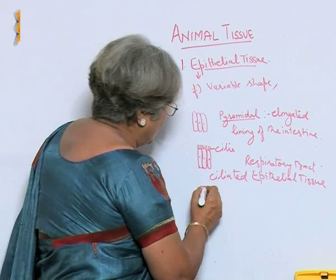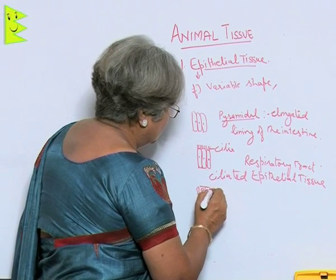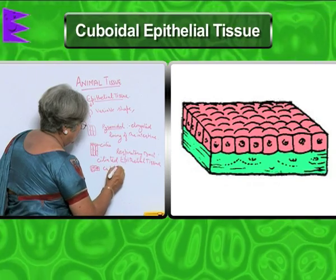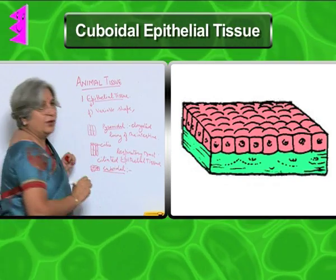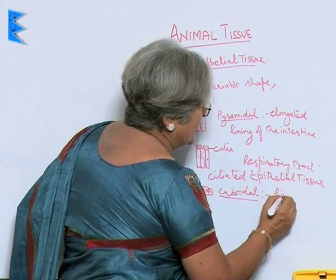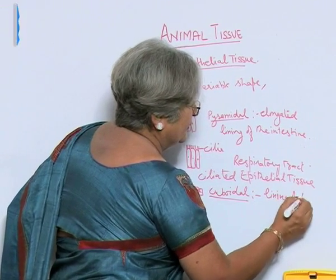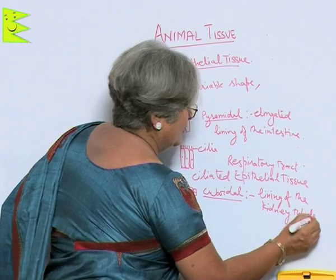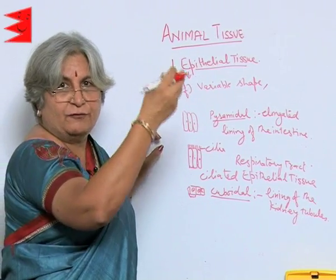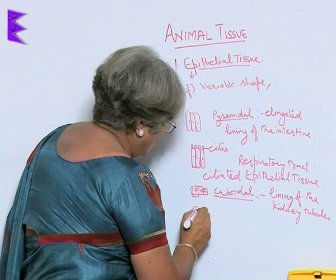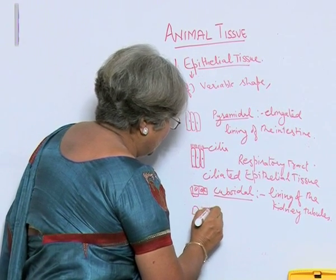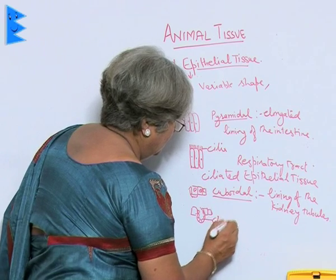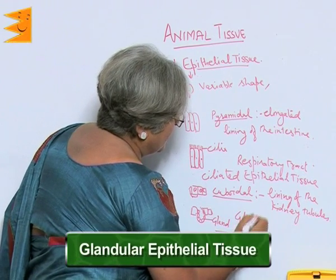Another shape is cube-like, with equal length, breadth, and thickness. These cuboidal cells make cuboidal epithelial tissue. Cuboidal epithelial tissue is found in the lining of the kidney tubules. Sometimes these cells make infoldings and form a multicellular gland — this is called glandular epithelial tissue.